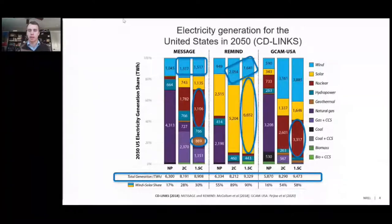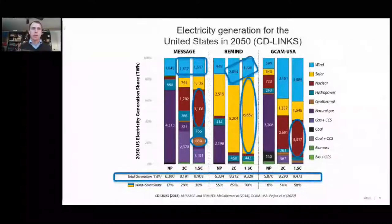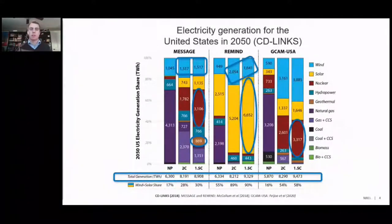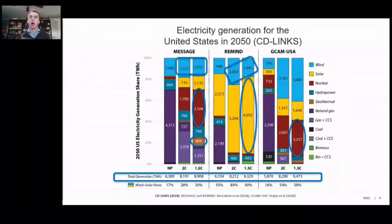Looking at GCAM USA, there is a bit of nuclear reliance in the 1.5°C scenario in addition to some wind and solar, raising questions about public perception of nuclear and the challenges of 58% renewable penetration. Some questions that arise from these comparisons: which of these model outcomes are technically feasible? What are some of the real-world constraints that are insufficiently captured in models, especially around renewable integration? And are there ways to harmonize the models given underlying methodological uncertainties?